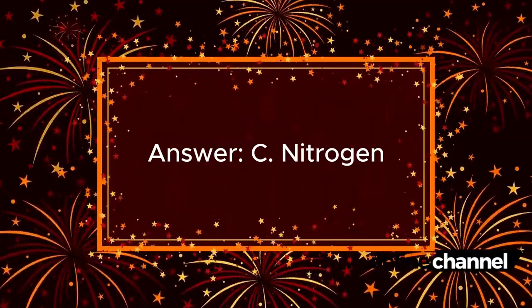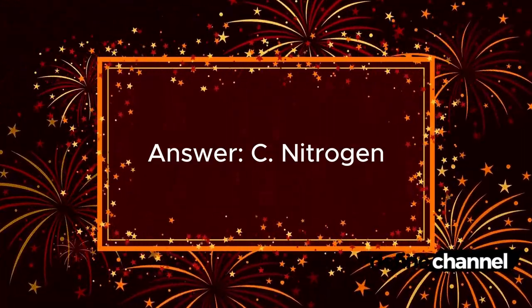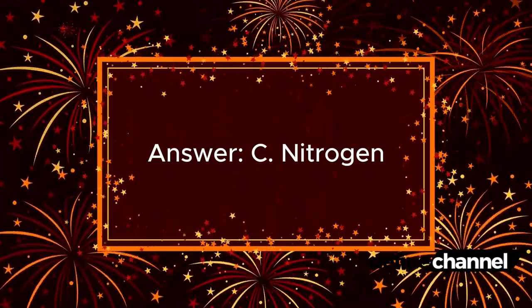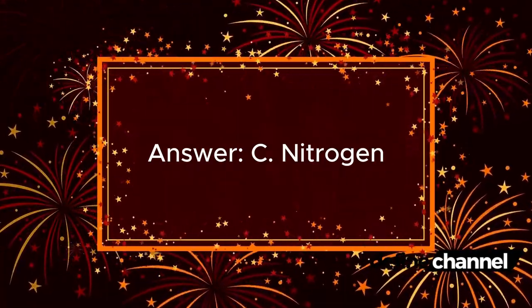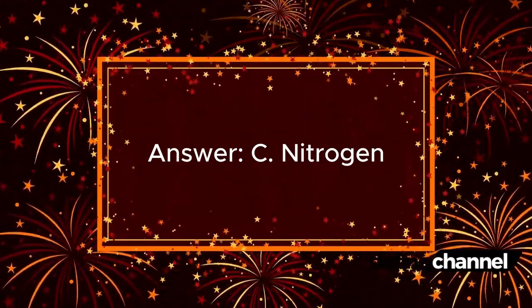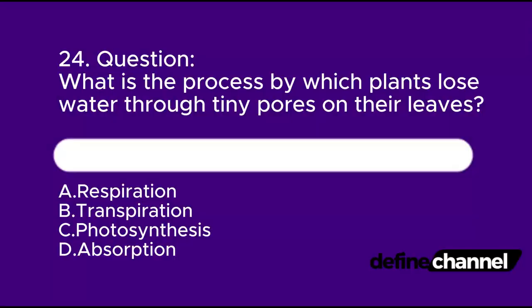Question 24. What is the process by which plants lose water through tiny pores on their leaves? A. Evaporation. B. Transpiration. C. Photosynthesis. D. Absorption. Which is the correct answer?